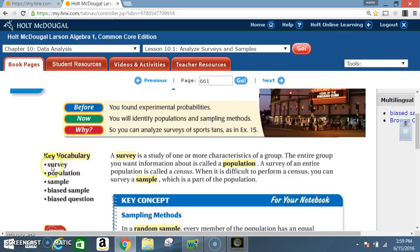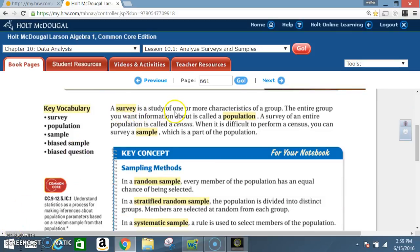Key vocabulary: survey, population, sample, biased sample, and biased question. A survey is a study of one or more characteristics of a group. The entire group you want information about is called a population. A survey of an entire population is called a census. When it is difficult to perform a census, you can survey a sample, which is part of the population.